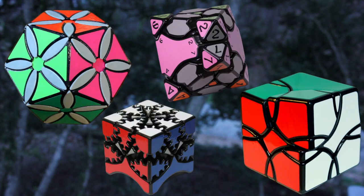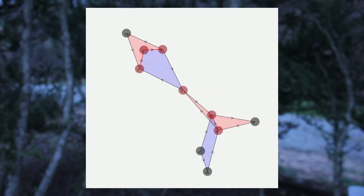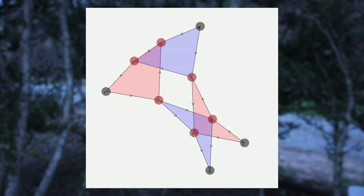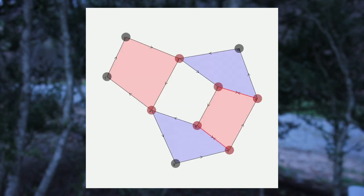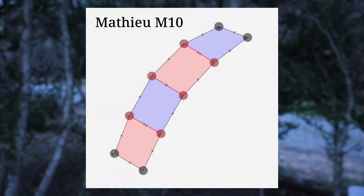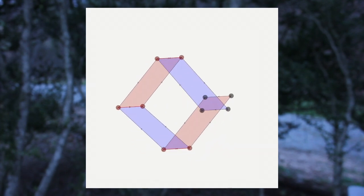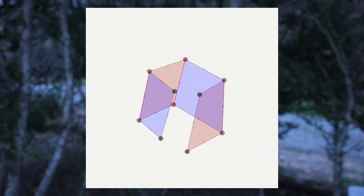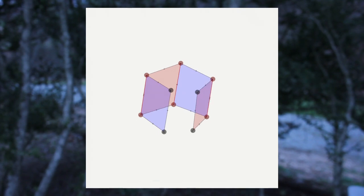This puzzle continues my exploration of unusual group theory properties in twisty puzzles. I took a different approach in designing this one, starting with a list of all planar graphs that can be used to generate the Mathieu M10 group. When I found one that looked easy to construct, I adjusted the points to match a known 3D geometry, in this case the corners of a pentagonal prism.